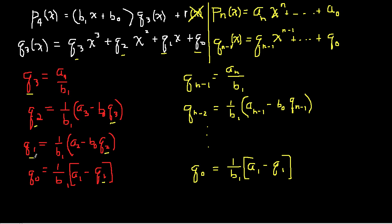Notice that the general formula for computing q₂ in terms of q₃, and q₁ in terms of q₂, and q₀ in terms of q₁ all have the same form — with constants b₀ and b₁ appearing in the same places each time. The only thing that changes is the aₙ coefficient: a₃, then a₂, then a₁.